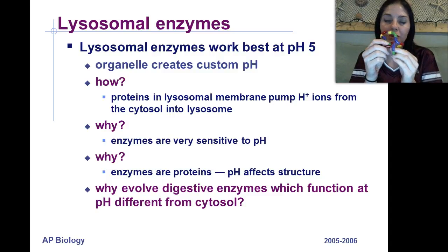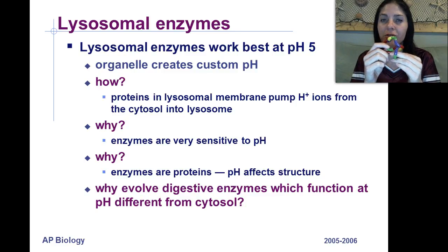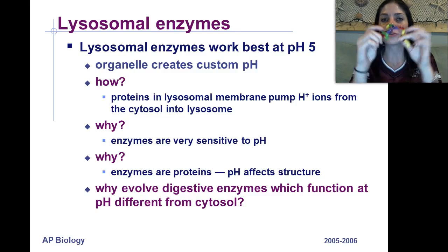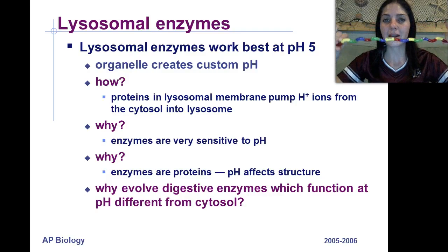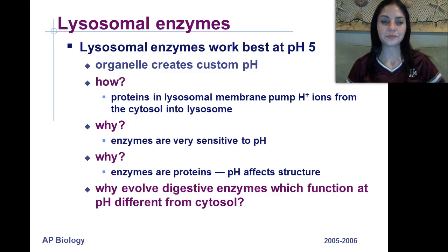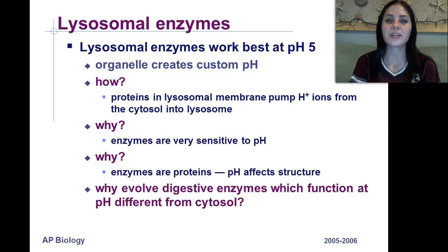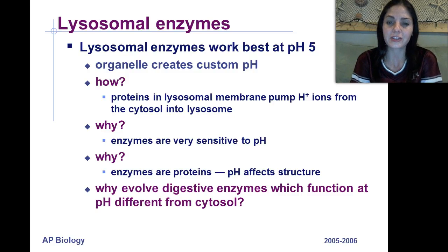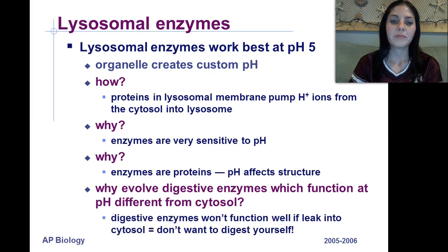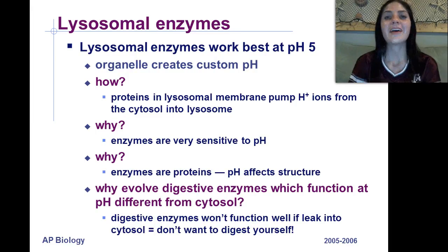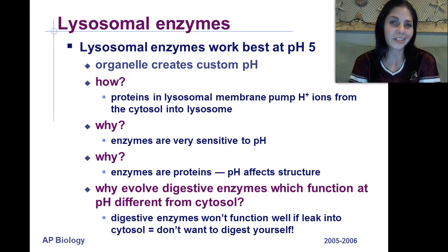If a protein gets exposed to very high temperatures or a pH outside its optimum range, the protein will denature back into its primary structure. So why evolve digestive enzymes that function at a pH different from the cytosol? Basically, digestive enzymes won't function well if they leak into the cytosol — you don't want to digest yourself.